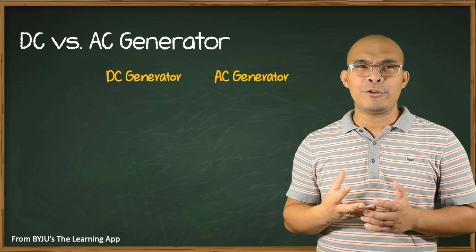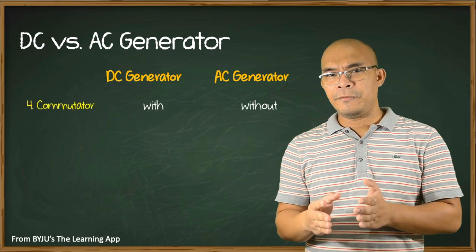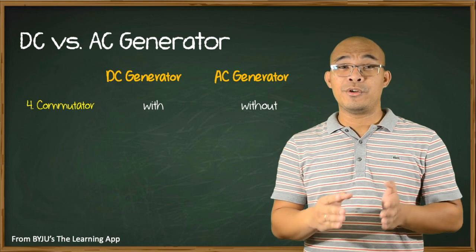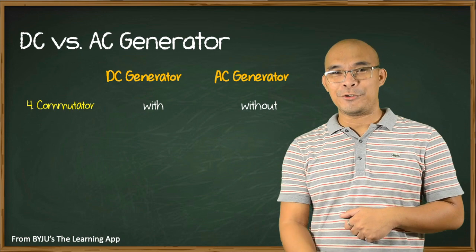With respect to commutators, DC generators have commutators to make the current flow in one direction only, while AC generators do not have commutators.